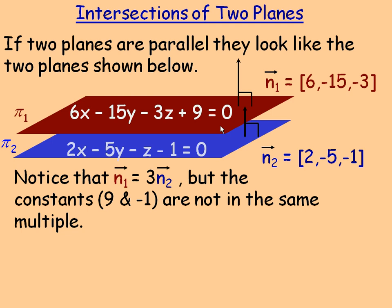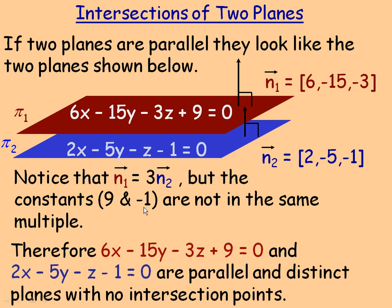An example of parallel planes that don't intersect are the floor and the ceiling of the room you're in — unless you're in an unusual room, they're normally parallel. The normals are parallel here, but notice that the constants 9 and negative 1 are not in the same multiple as the normals. If the constants were in the same multiple, the planes would actually be the same plane — called coincident planes, sharing all common points. Since the constants are not in the same multiple, the planes are parallel and distinct.